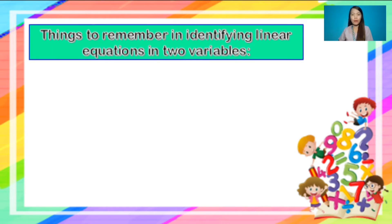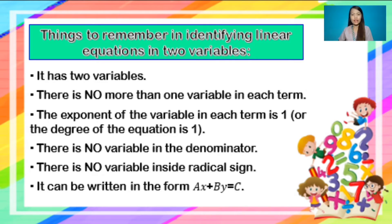Things to remember in identifying linear equations in two variables. First, it has two variables. Second, there is no more than one variable in each term. Third, the exponent of the variable in each term is 1, or the degree of the equation is 1. Fourth, there is no variable in the denominator. Fifth, there is no variable inside a radical sign.